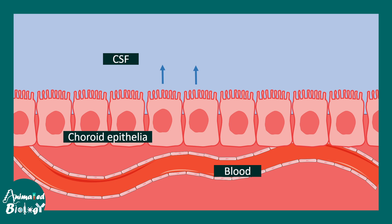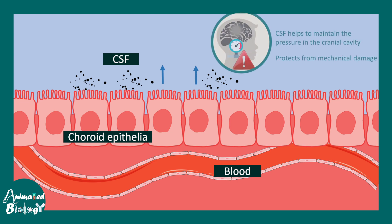Apart from fluid, CSF also has several proteins, molecules, and growth factors which regulate several functions of the brain. CSF maintains the cranial pressure and protects the brain from any kind of mechanical damage.